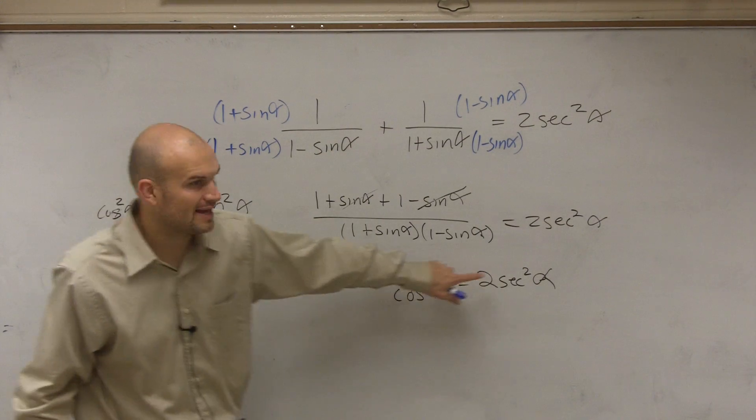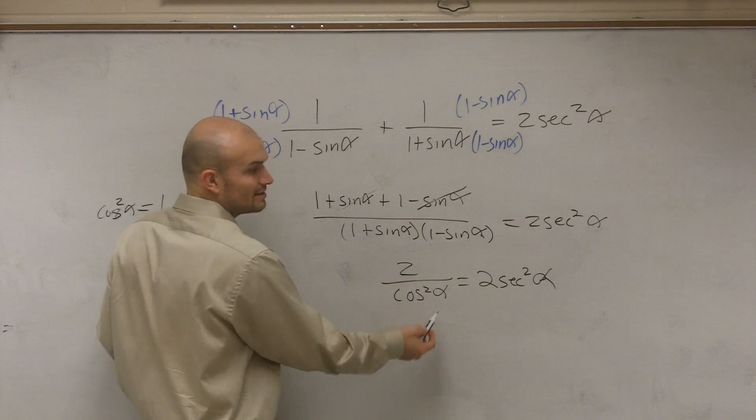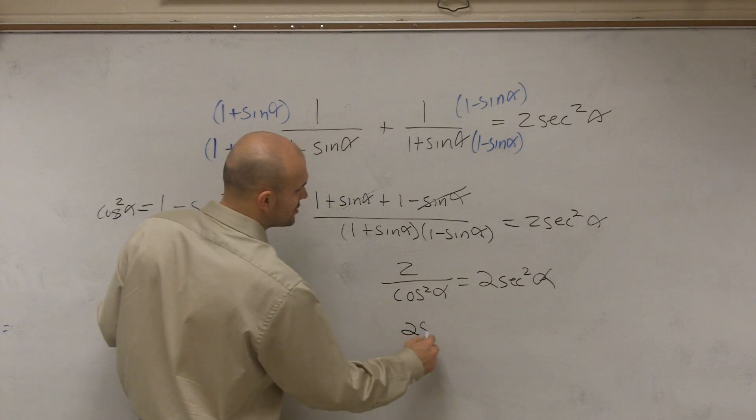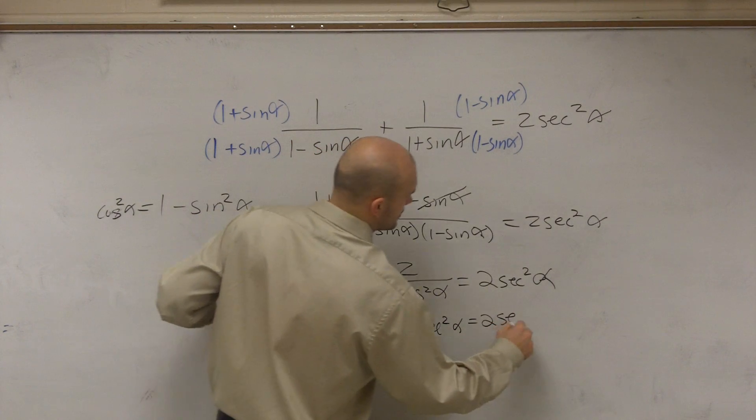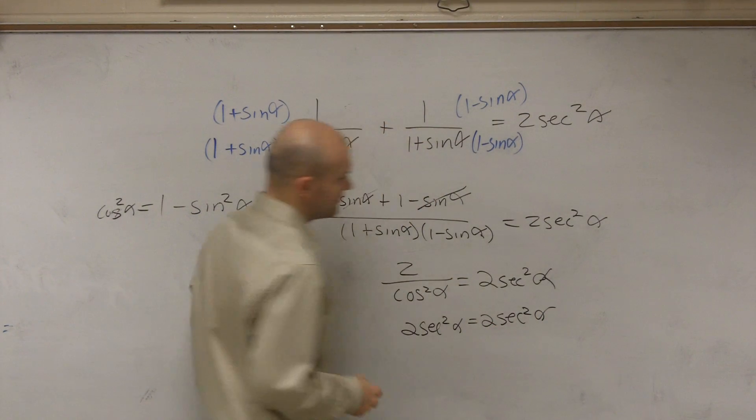So then, you look at this, and obviously, when you have cosine in your denominator, that's the same thing as 2 secant squared of alpha equals 2 secant squared of alpha.